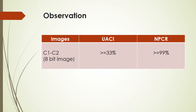A cryptosystem having UACI greater than 33% and NPCR greater than 99% can withstand the differential attack.